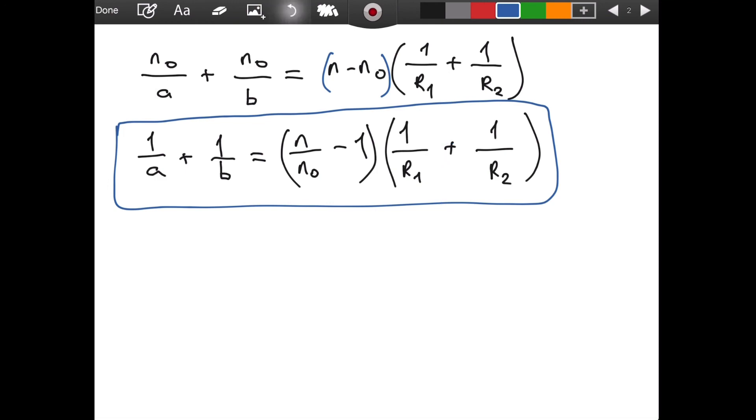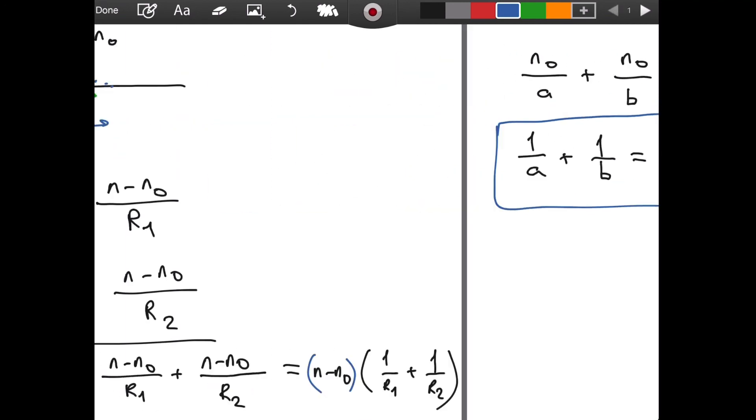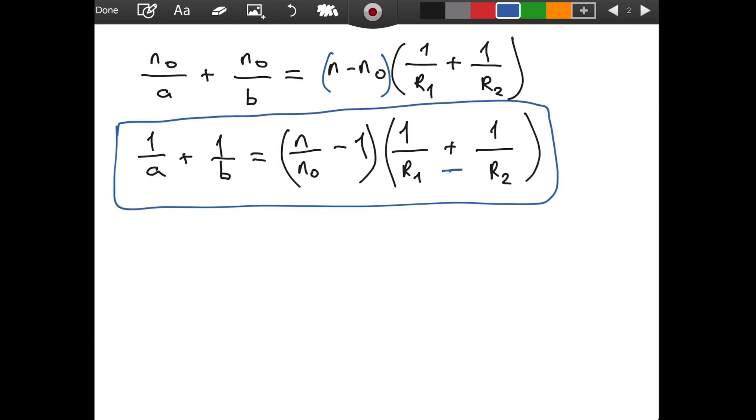The convention is, perhaps, some people use a minus here. And, that comes from this step. They would have written n₀ minus n instead of n minus n₀. And, you can do that. But, that's not how I prefer to do it. So, in our convention, in this case, perhaps, for example, r₂ would be a negative value.